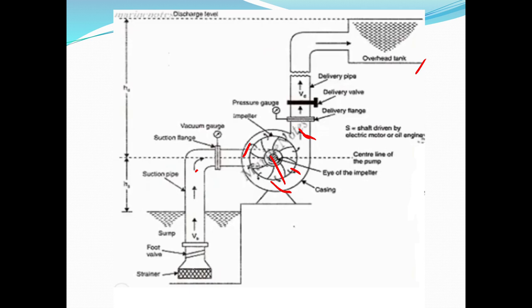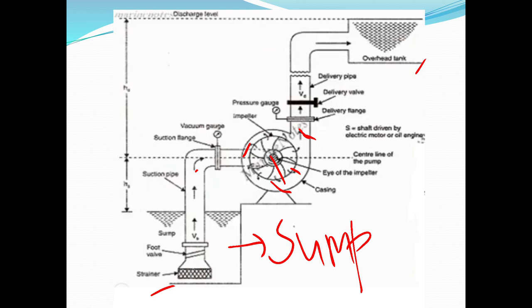Now let's take a look at this portion. This is the liquid that contains the water — this is the sump portion. This is the strainer. The strainer filters out waste material, keeping the flow clean.